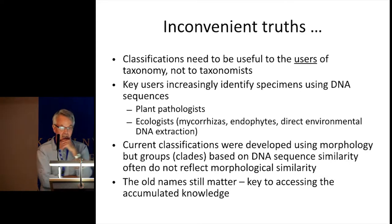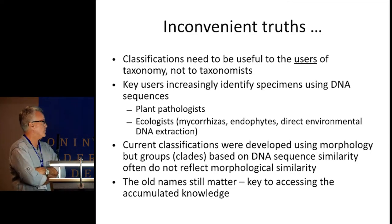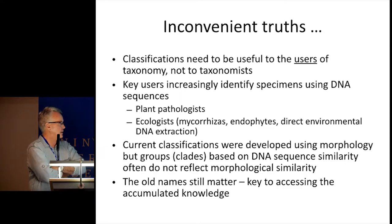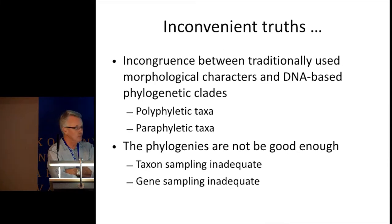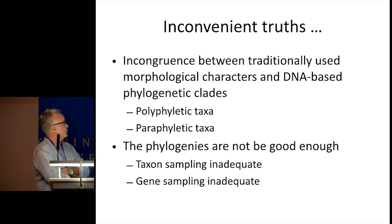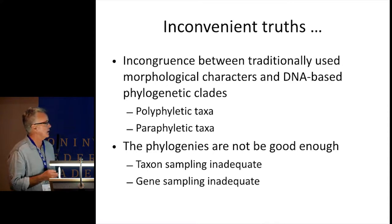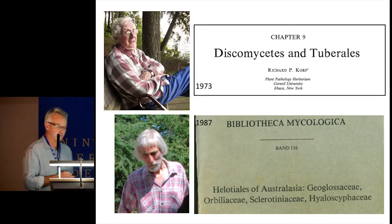The next inconvenient truth: the current classifications were developed using morphology, but groups or clades based on DNA sequence similarity often don't reflect morphological similarity. You can't just toss everything out and start again, because the old names still matter — they're the key to accessing all the knowledge that's built up on the various species in this class. The incongruence between traditionally used morphological characters and DNA sequences means we have to deal with polyphyletic and paraphyletic taxa. Also, the phylogenies we're using at the moment might not actually be good enough because of inadequate taxon and gene sampling.